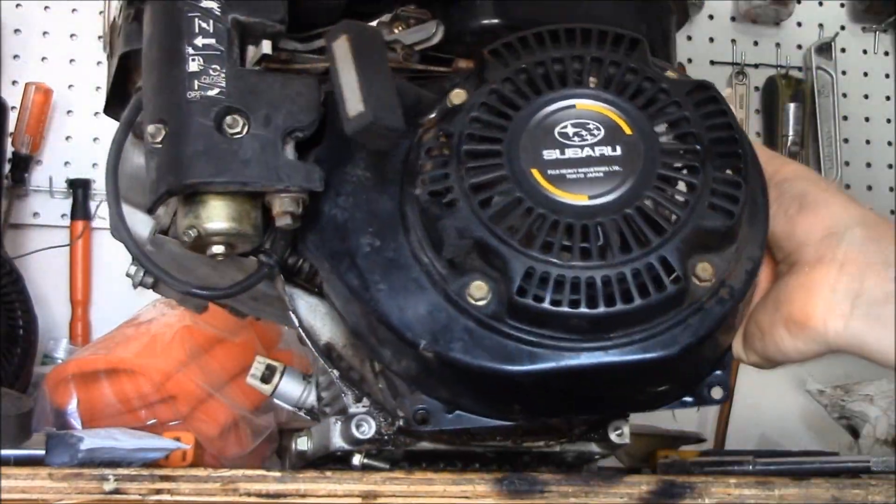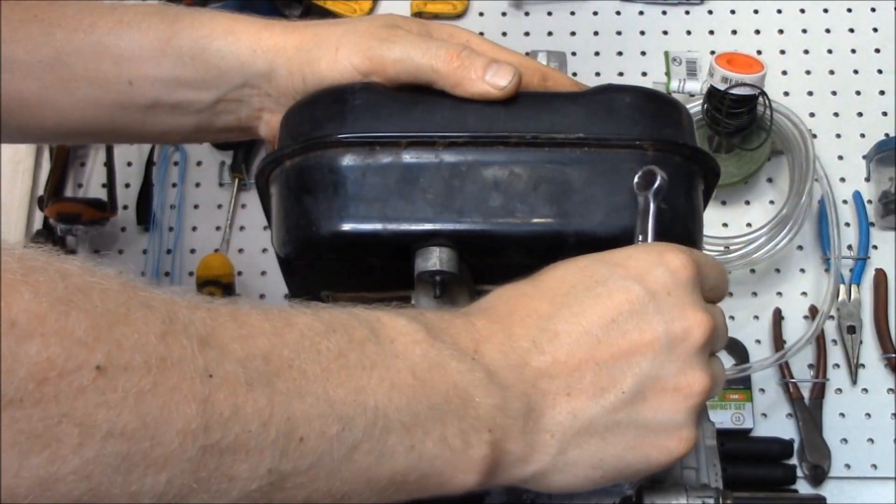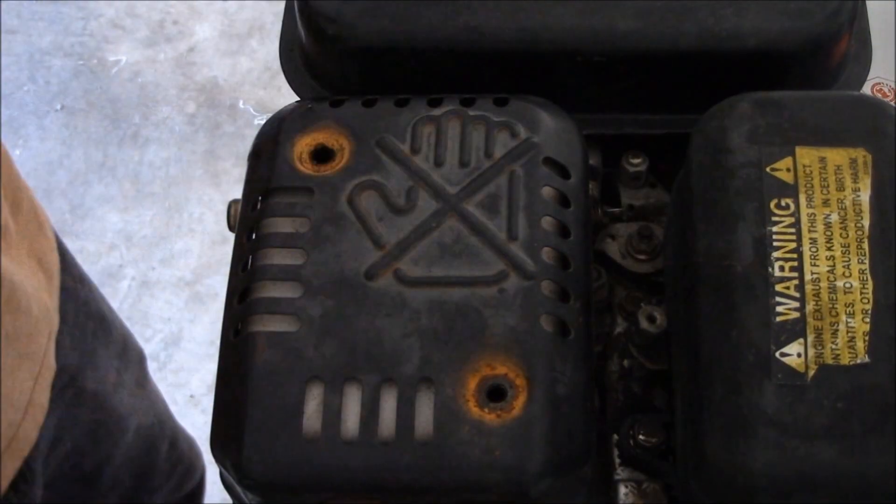So what you want to do first is remove the shroud, tank, fuel line, and then clean out your carburetor. The reason why is you can have gunk in your tank, fuel line, and carburetor, not just your carb.